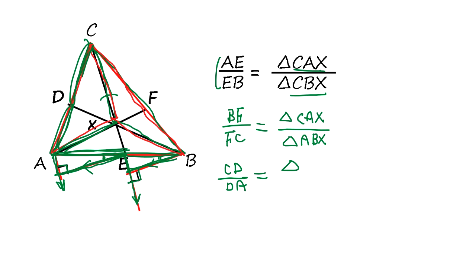And this segment ratio CD over DA equals this triangle's area ratio, which is CBX to ABX.